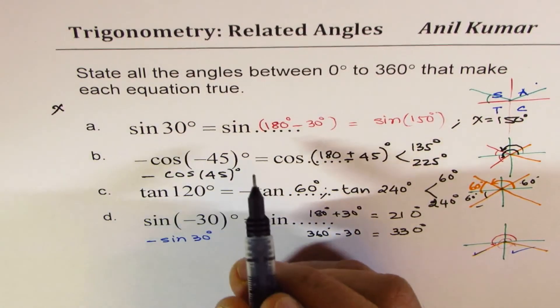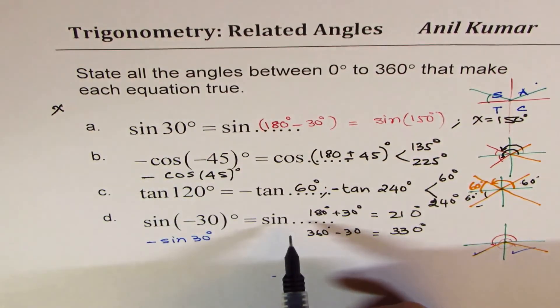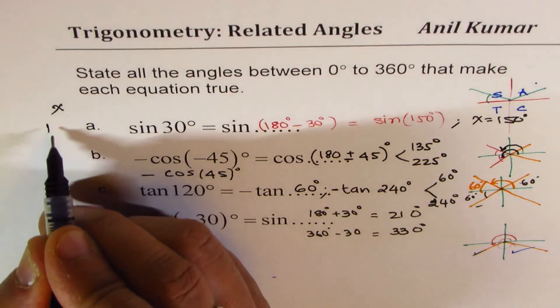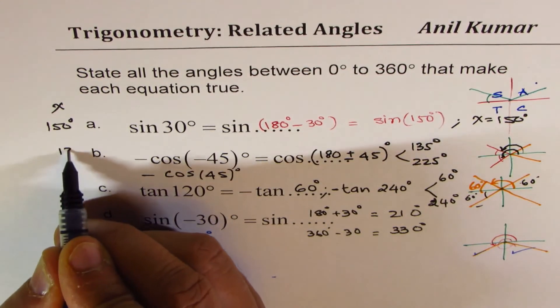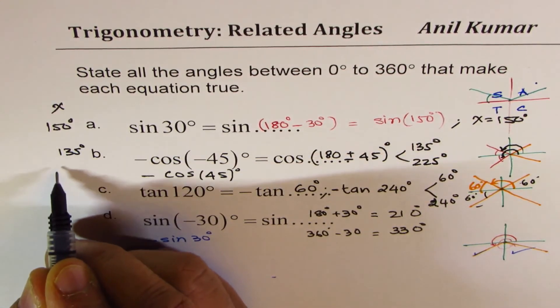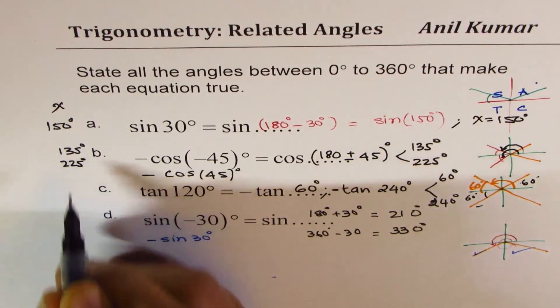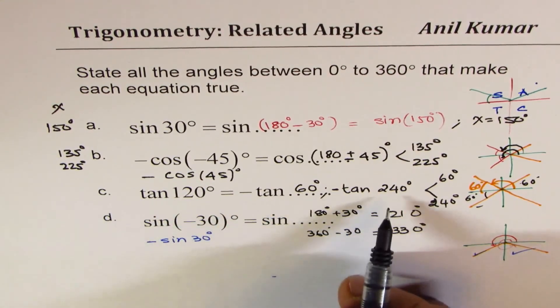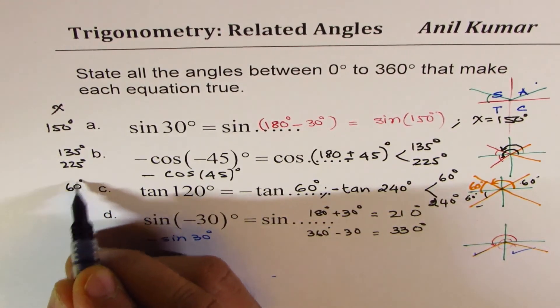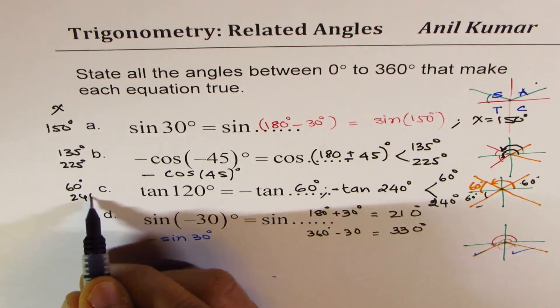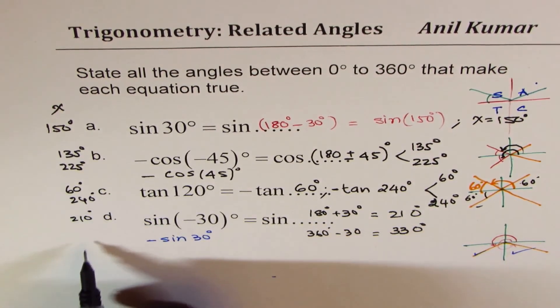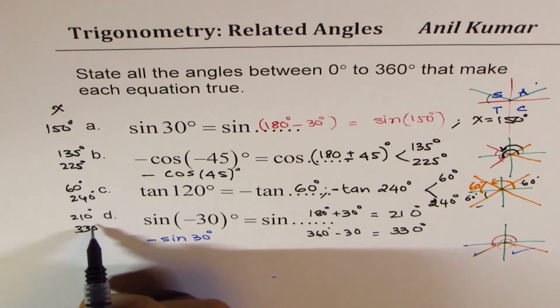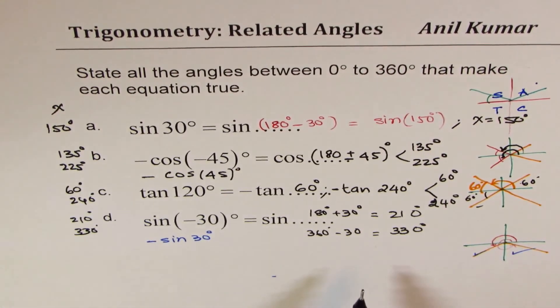So let me rewrite the answers. The angle X in each of these cases will be: in the first case, 150 degrees; in the second case, there are two solutions, 135 degrees or 225 degrees; in the third case, we have two solutions, 60 degrees or 240 degrees; in the fourth case, we got 210 degrees or 330 degrees.